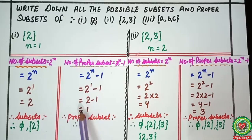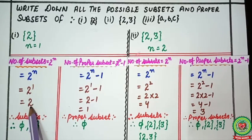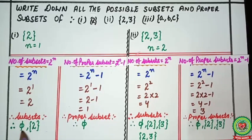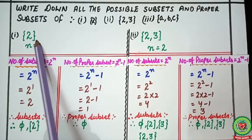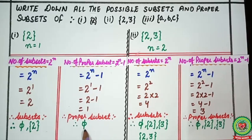You can notice: here 2 subsets can be formed but only 1 proper subset. Always, the number of proper subsets is 1 less than the number of subsets — if you get 5 subsets, you get 4 proper subsets; if 10 subsets, then 9 proper subsets. So the subsets are: first, we always write the empty set ∅, and second, the set itself: {2}. For the proper subsets, we include only the empty set ∅ — the set itself is not included.